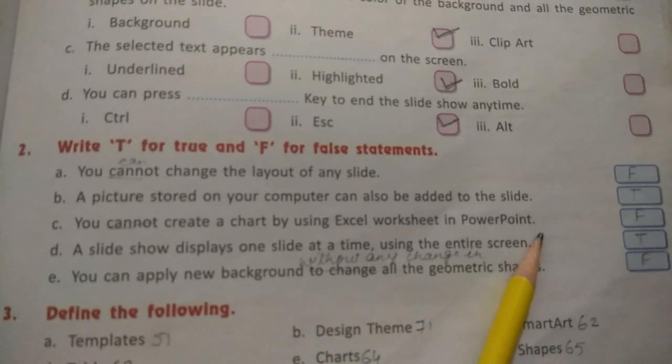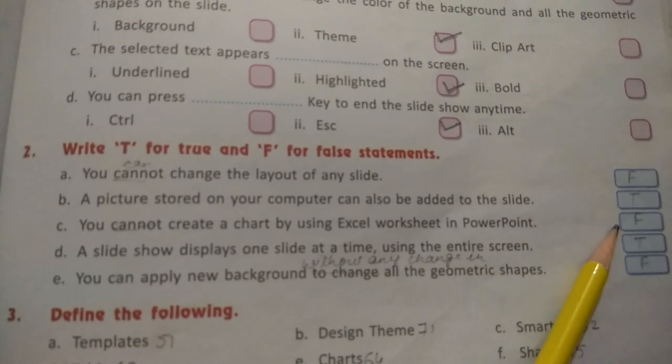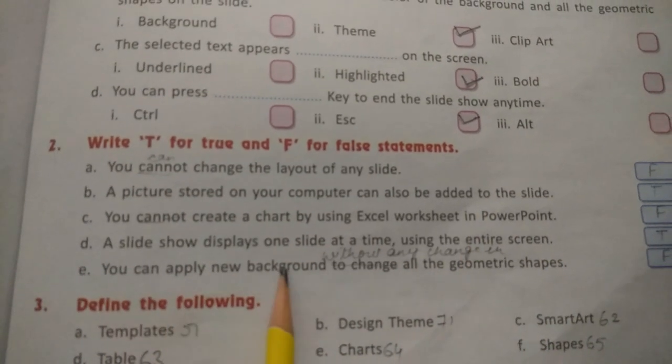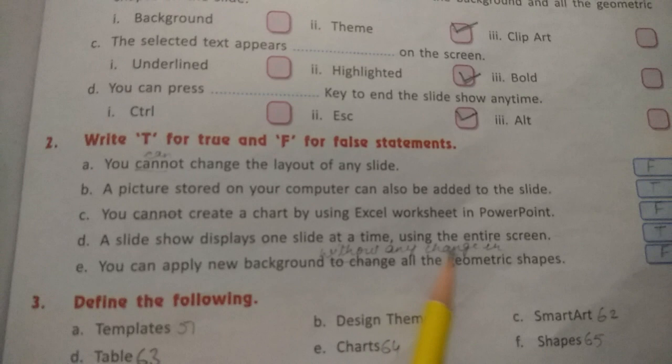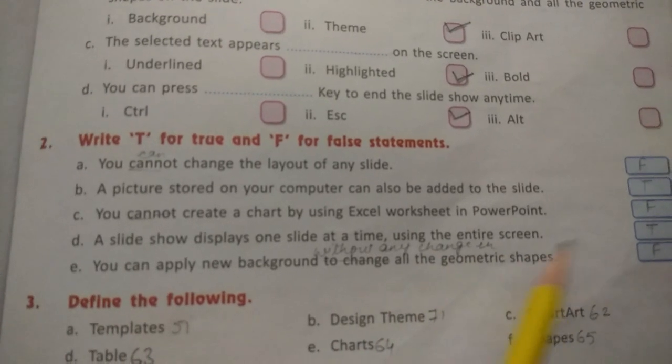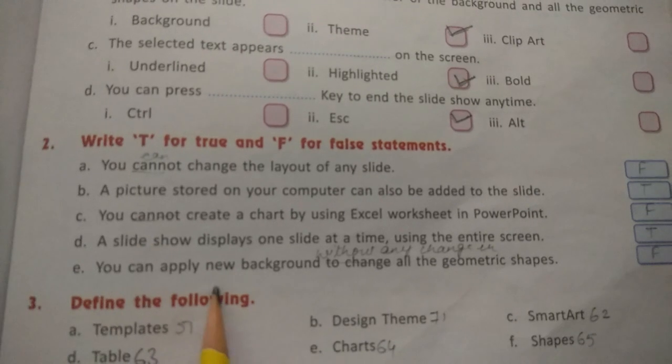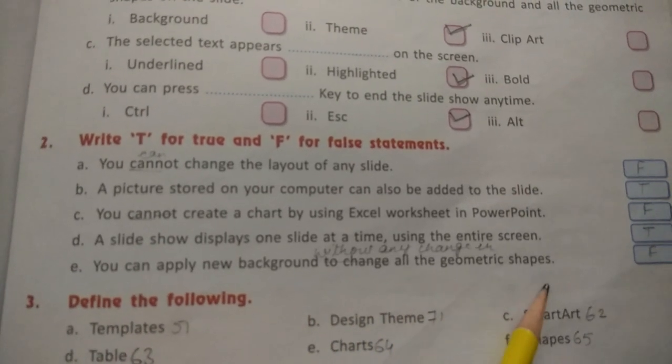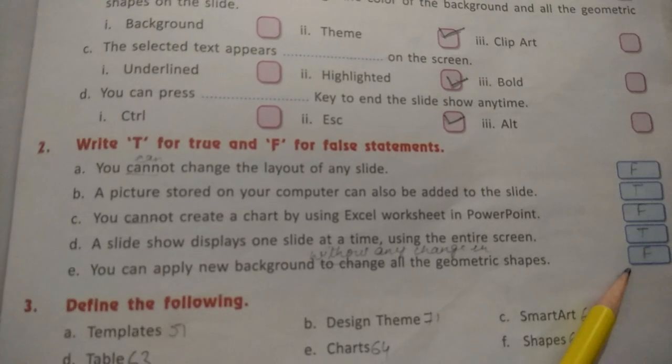A slide should display one slide at a time using the entire screen - write down T true. You can apply new background to change all the geometric shapes - write down F, and for the true statement underline to change and write to change.